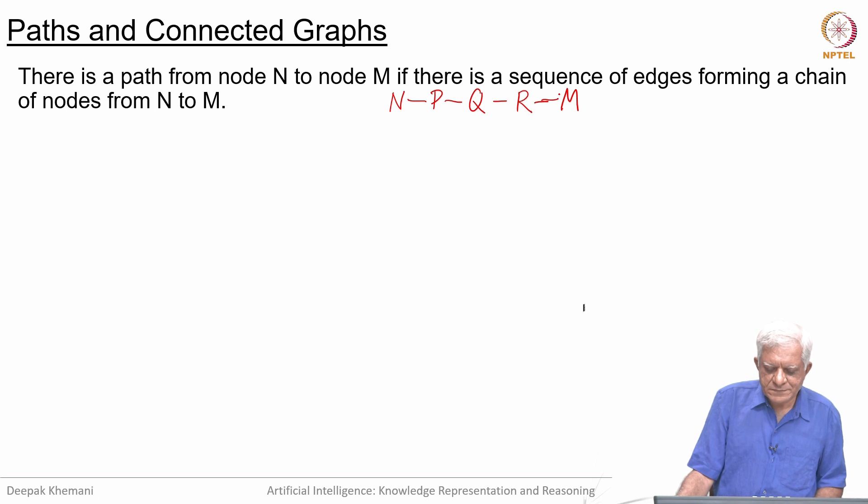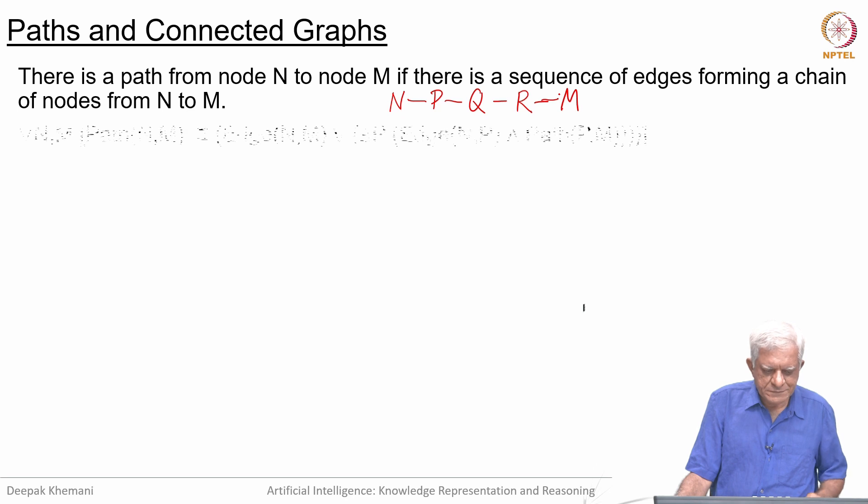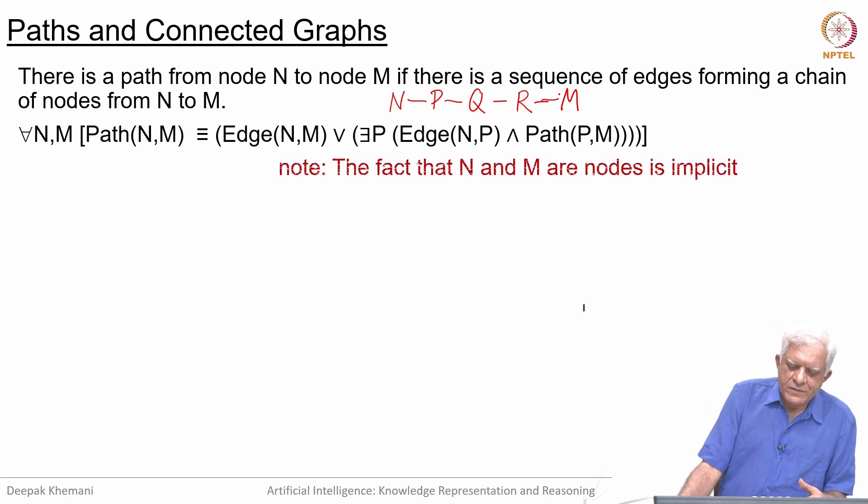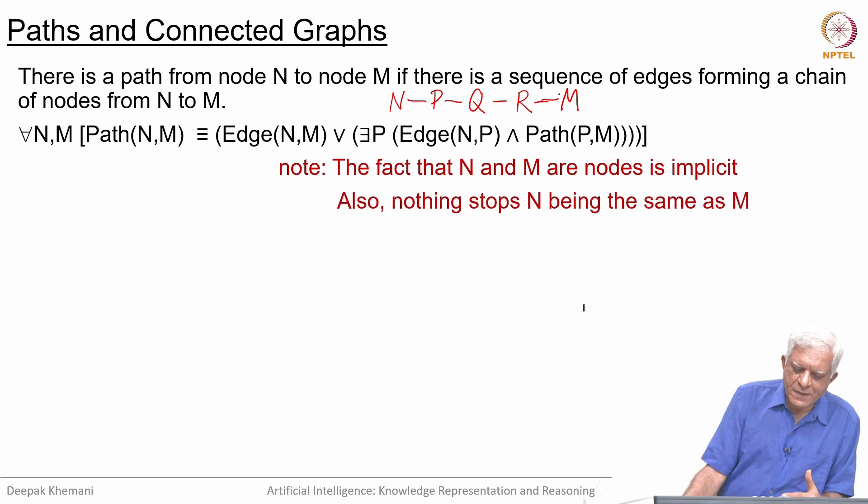We can define this predicate called path. There is a path from node N to node M if either there is an edge from node N to M or there exists some node P such that there is an edge from N to P and there is a path from P to M.